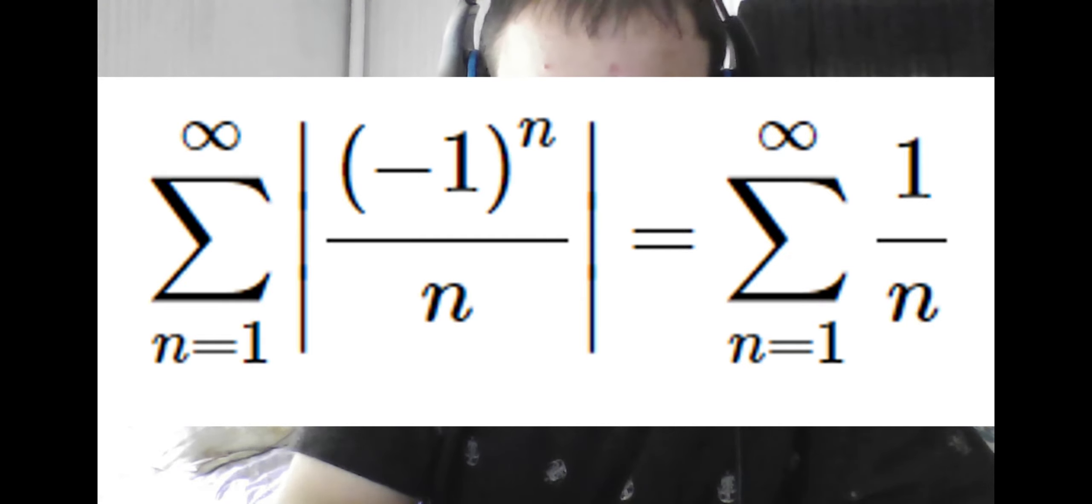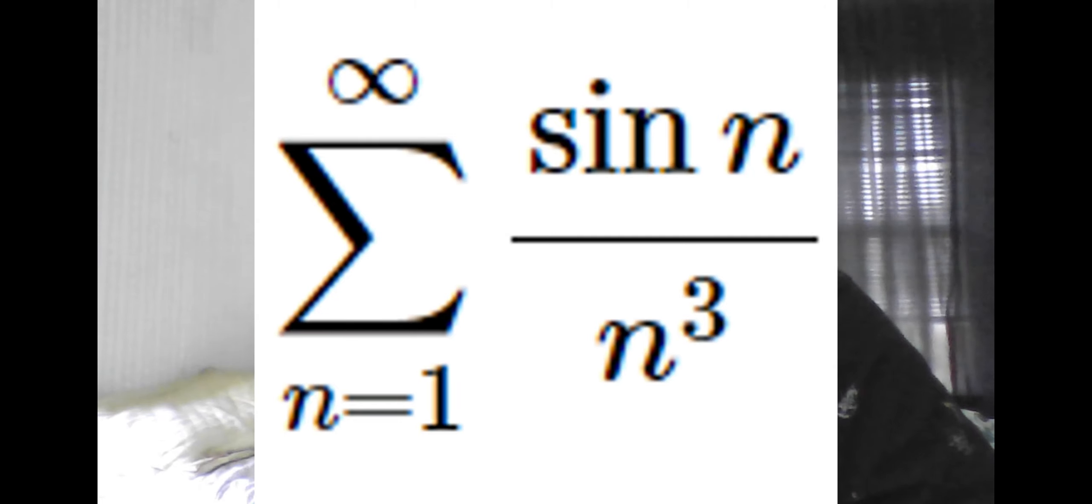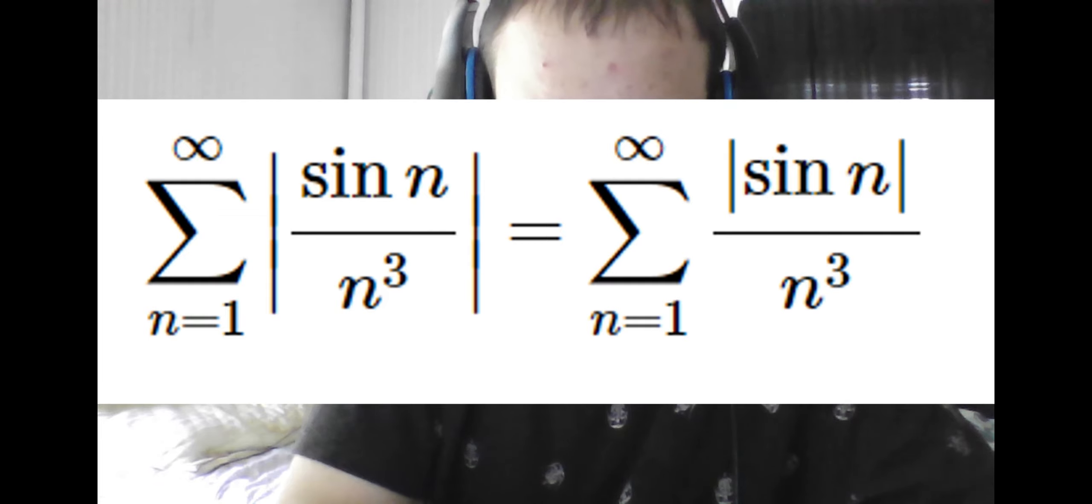If we were given a more complex sum such as this, we would put absolute bars around it, seeing that because sine is normally between negative 1 and 1, absolute sine must be always less than 1, and the absolute of n cubed is simply n cubed. So we have derived a limit we can test this with, seeing that our test limit converges if we use the integral test on it.